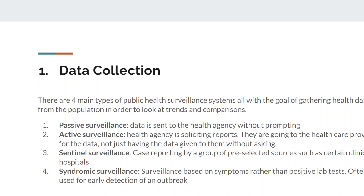Third is sentinel surveillance — case reporting by a group of pre-selected sources, such as certain clinics or hospitals. For example, if I wanted to figure out the occurrence of lead poisoning in Flint, why would I include hospitals over the whole state of Michigan? I would just target Flint, or maybe specific neighborhoods in Flint to see differences in demographics, race, and age. You can stratify, and this helps collect data to compare certain things and allow for comparison between two different groups.